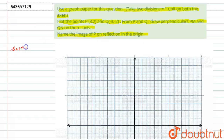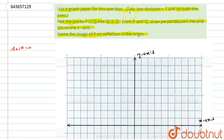So here we have to use the graph paper and onto that, we have to plot all the things which we have given here. Let's consider this is the graph paper on which I have drawn the axes — this is the x-axis and similarly this is the y-axis. Now if I will try to give the scale, according to the instruction given here, take two divisions equal to one unit.